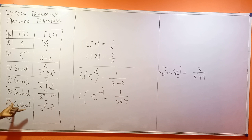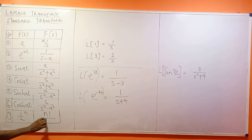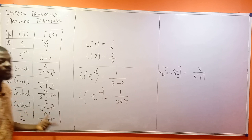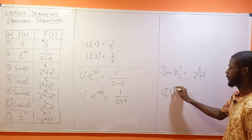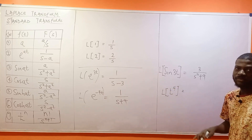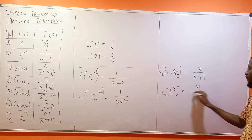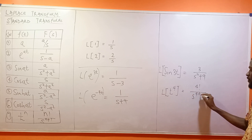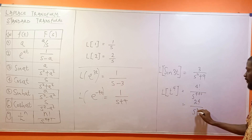Finally, the Laplace transform of T to the power of N is N factorial over S to the power of N plus 1. For example, the Laplace transform of T to the power of 4: you first say 4 factorial divided by S to the power of 4 plus 1, which gives you 24 divided by S to the power of 5.